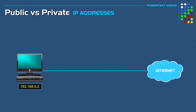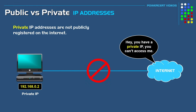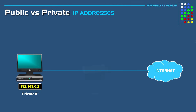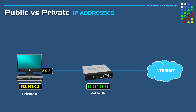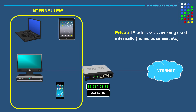Private IP addresses are not publicly registered on the internet, so you can't access the internet using a private IP address. However, if your device does have a private IP address and you want to access the internet, your private IP has to be converted into a public IP address before you can do so. This is because private IP addresses are only used internally, such as inside a home or a business — they are not used out on the public internet.